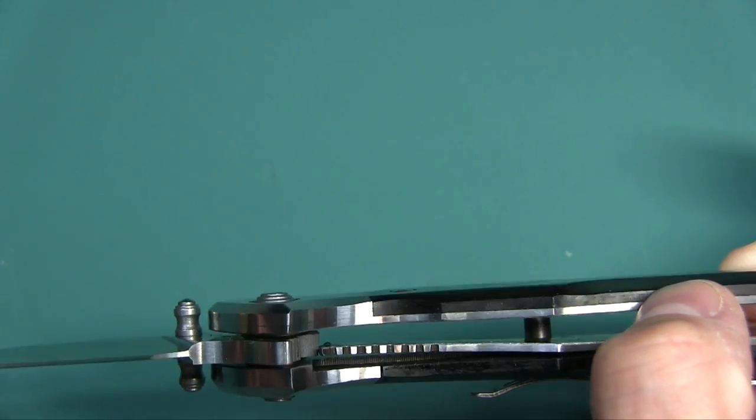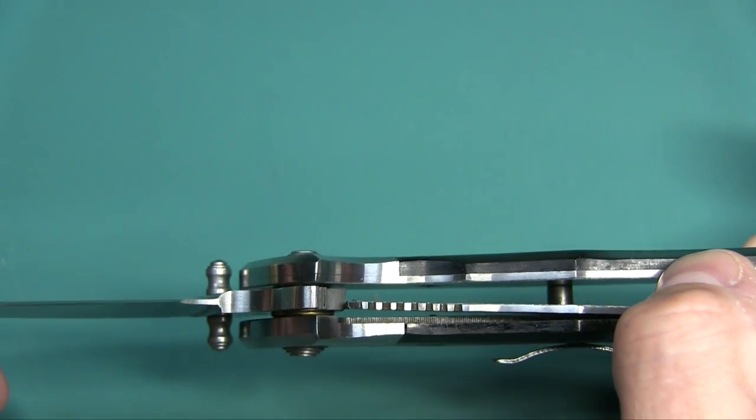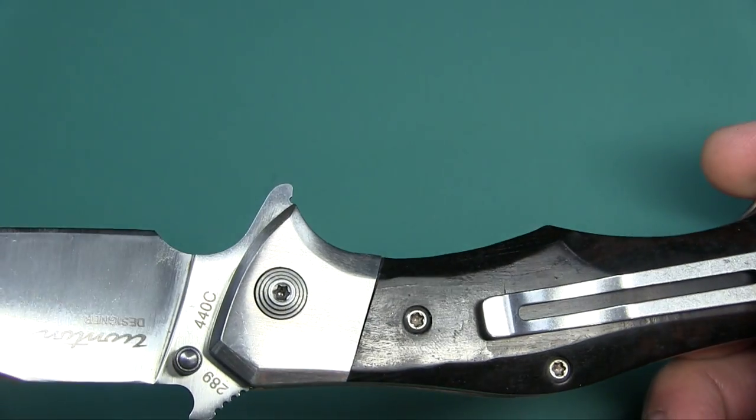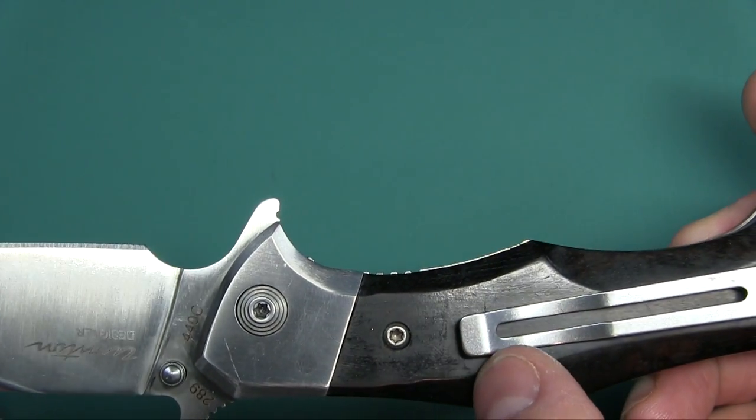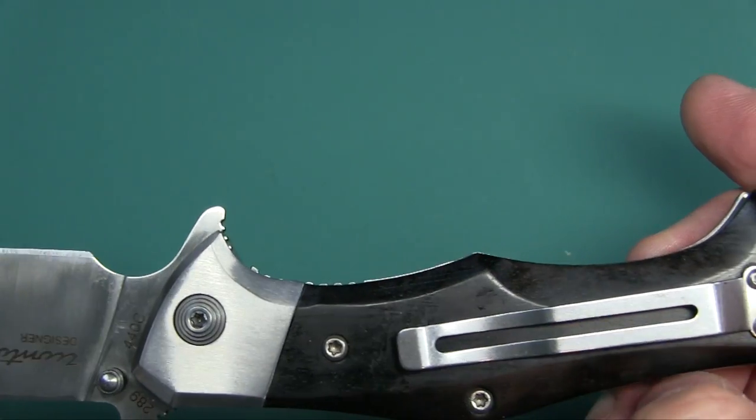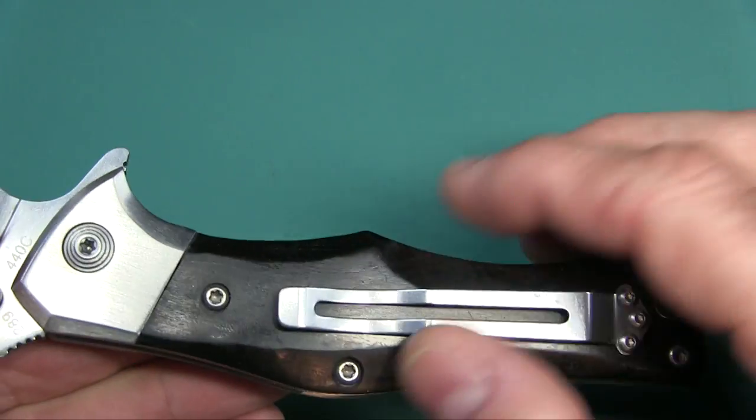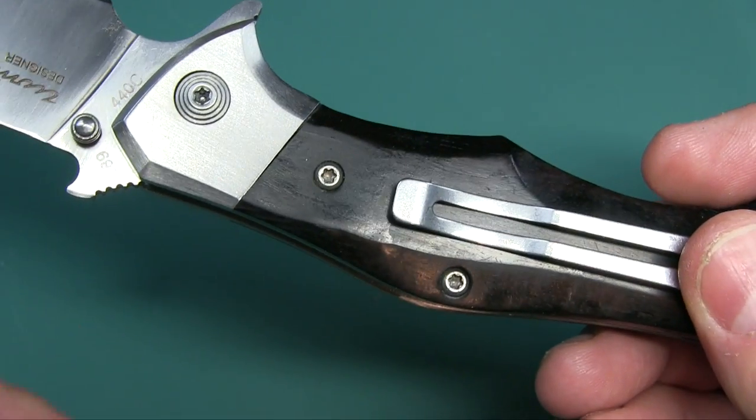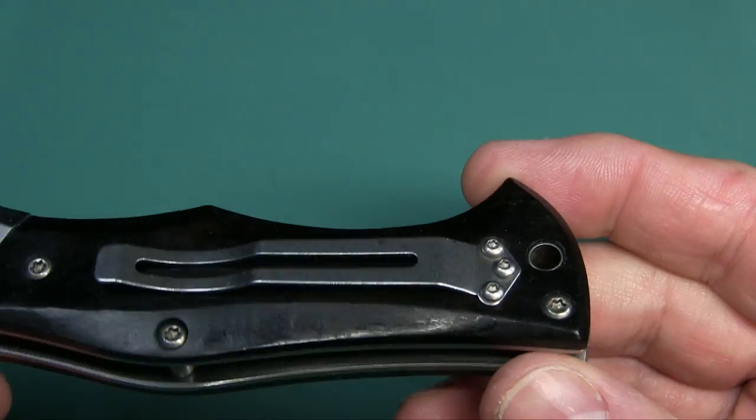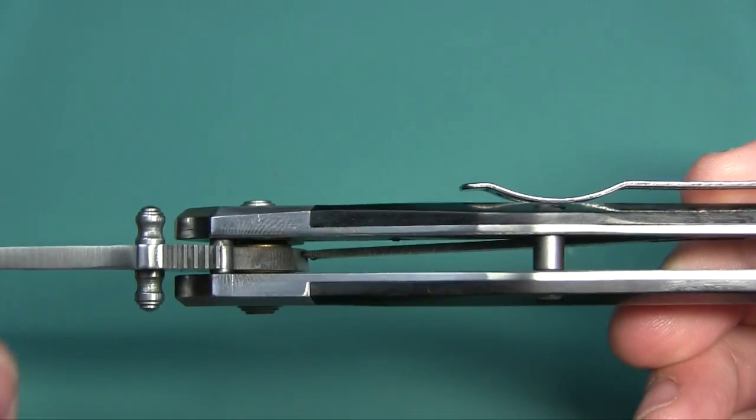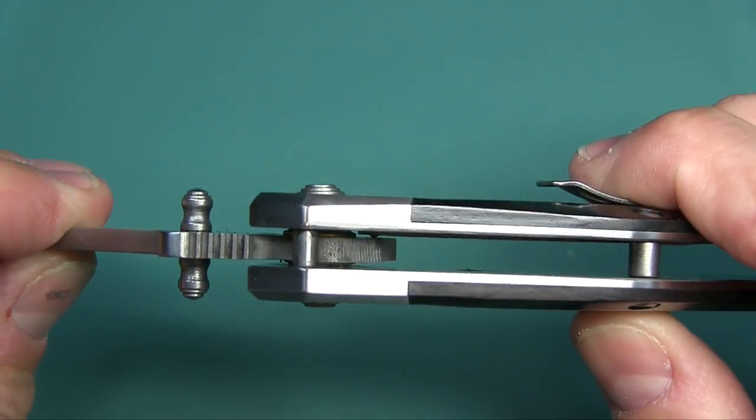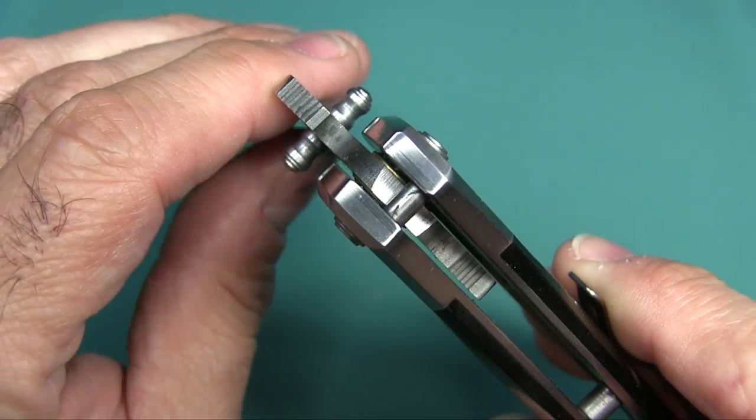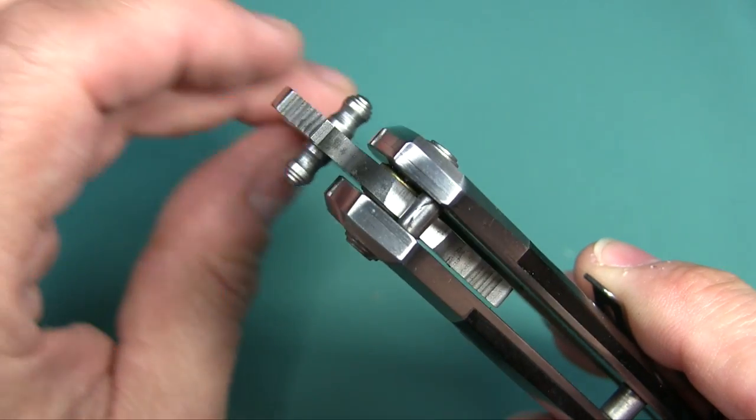Again you might be able to make out the ball bearings down in there. Maybe, maybe not. Liner lock. Fit and finish. And again you can see a little bit of the inconsistent finish on this side a little bit better. See the clip. Clip is nice and tight. It's not going to fall out of your pocket. I'm trying as best I can here. I think you can see just a little bit in there. See the balls?